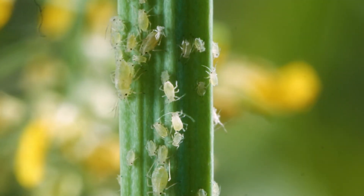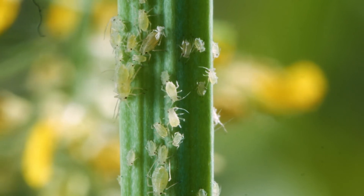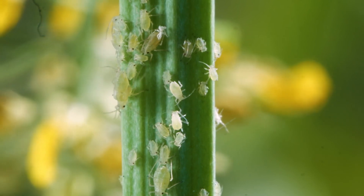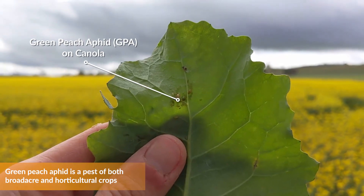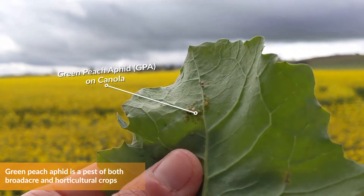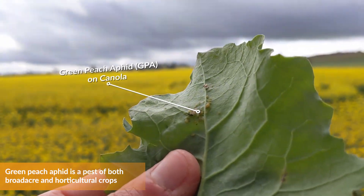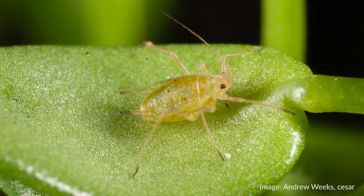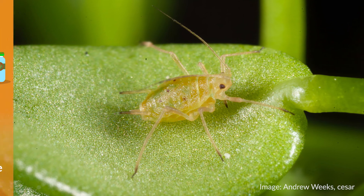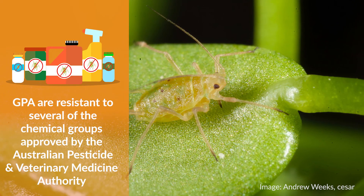In this video we will show you how to identify the green peach aphid, or GPA for short, a widespread pest of horticultural and broadacre crops in Australia. It is important to correctly identify this aphid species as it has developed resistance to several insecticide groups.